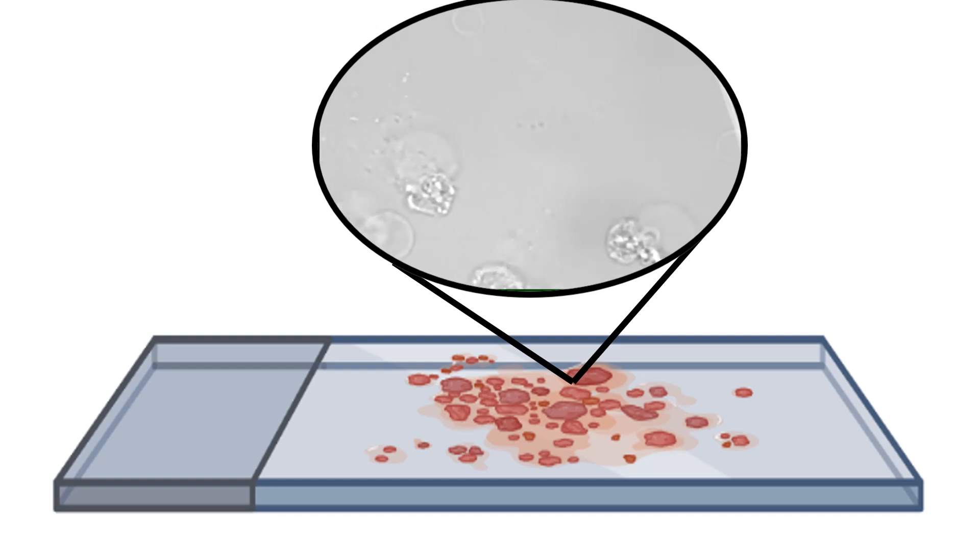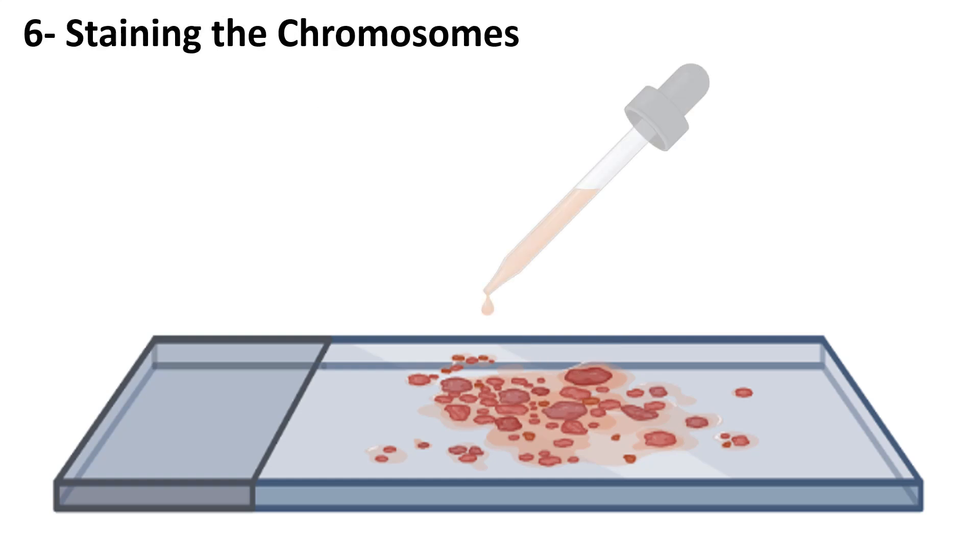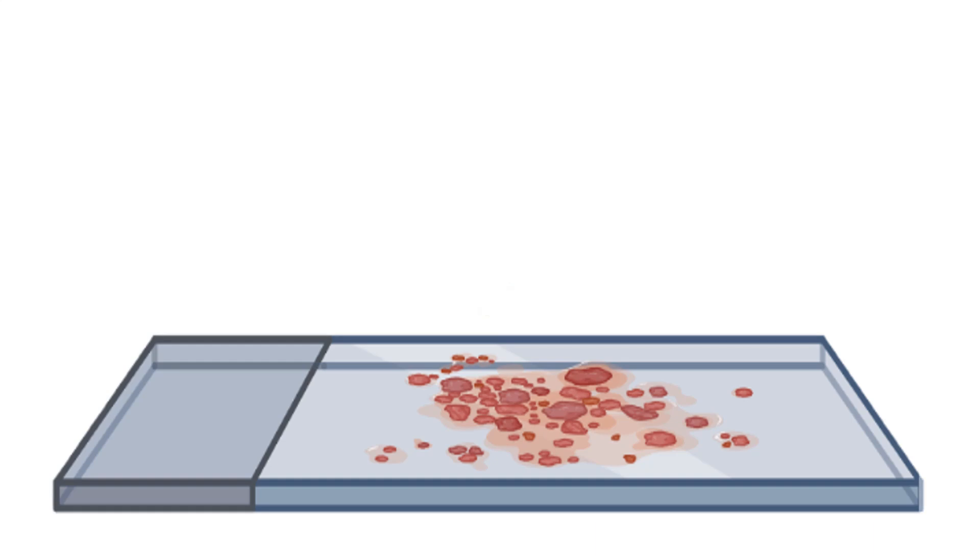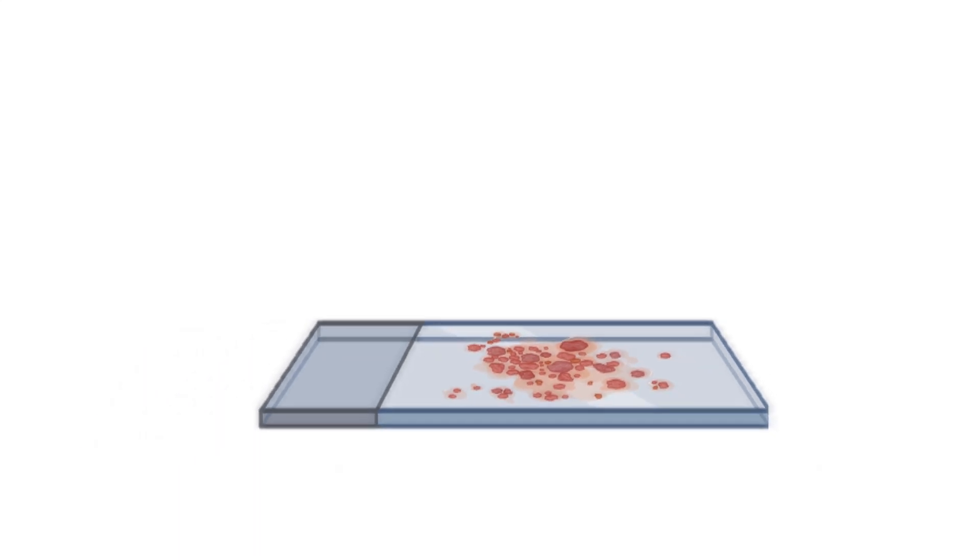The sixth step is staining the chromosomes. Chromosomes are naturally colorless. In order to tell one chromosome from another, a special dye called Giemsa stain is applied to the slide.